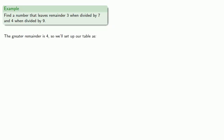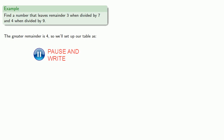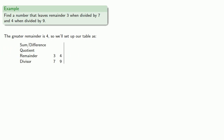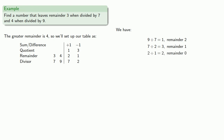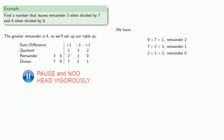The greater remainder is 4, so we'll set up our table. The difference in the remainders is 1, and we'll form our quotients. 9 divided by 7 is 1 remainder 2, 7 divided by 2 is 3 remainder 1, 2 divided by 1 is 2 remainder 0. Because our remainder is 0, we have to stop here.